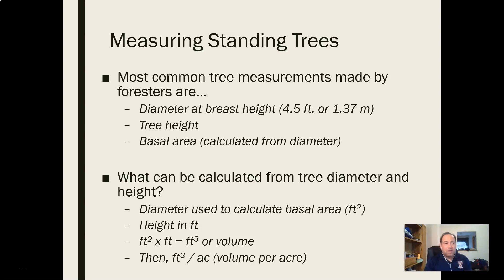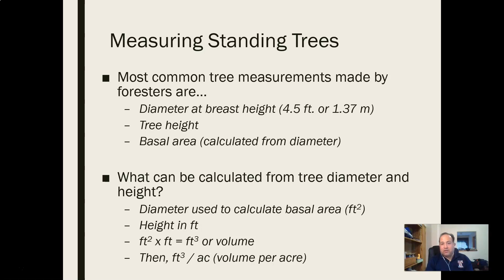Today's lecture focuses on diameter. The other thing we can get from tree diameter, when we combine it with tree height, is cubic volume. Our diameters get us to basal area — a square footage measurement of the forest — and when we combine that with tree height, we get a volume per acre of the forest. That's really useful for inventory when we're trying to do calculations and find out stocking rates for the forest.